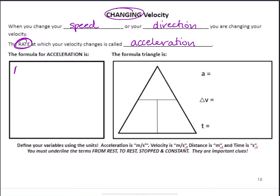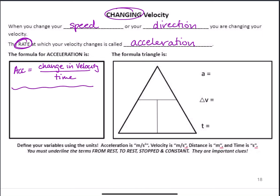The formula: acceleration is equal to the change in velocity divided by time, which is what gets us to our rate. More specifically, acceleration equals the final velocity minus the initial velocity — that's our change in velocity — divided by time. This idea of change is familiar from when we talked about displacement using water in graduated cylinders. The F stands for final, the I stands for initial, and the difference between those two is how the velocity has changed.